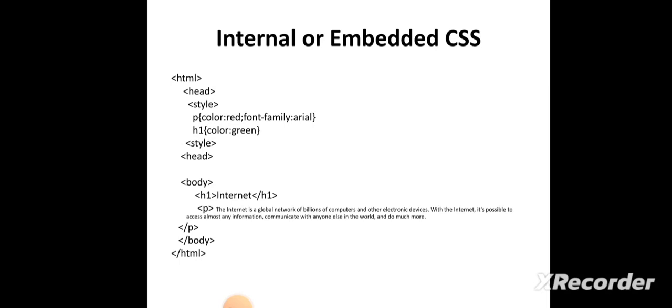This style can be applied to the whole document. The heading is printed in green color and the paragraph is printed in red color. Similarly, if we use another heading and another paragraph, they are also displayed in the same format. This is the internal style sheet.